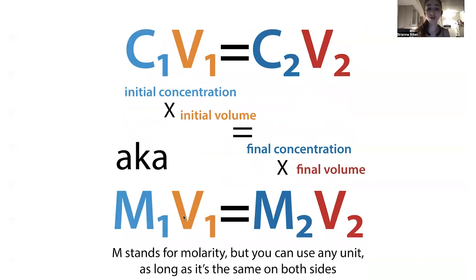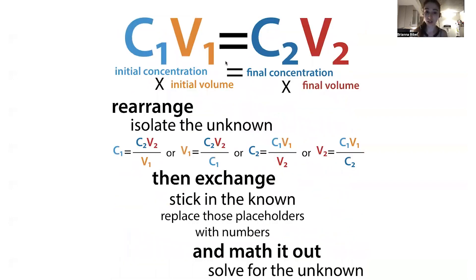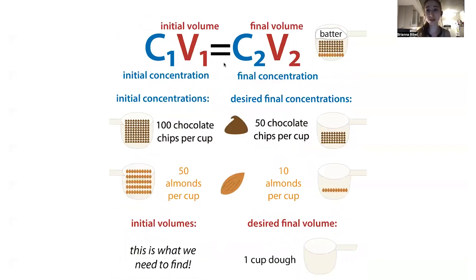We can use this equation for more than just molarity, which is why this more generic form is often used. We can use this concentration in any form as long as it's consistent between the sides. This can be percent weight by volume or percent volume by volume, as long as the same is on each side. It can even be chocolate chips per cup.